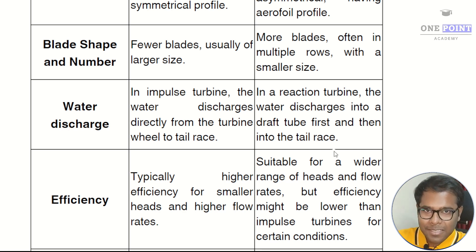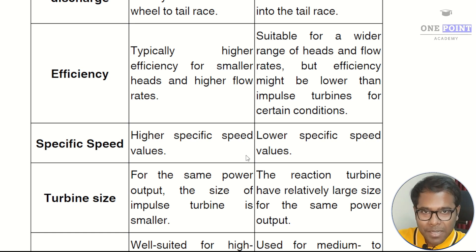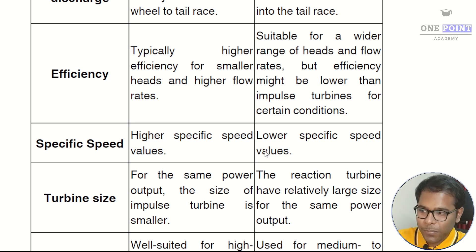The next difference is with respect to specific speed. The specific speed in an impulse turbine is very high due to high velocities, whereas in a reaction turbine the specific speed is very low.